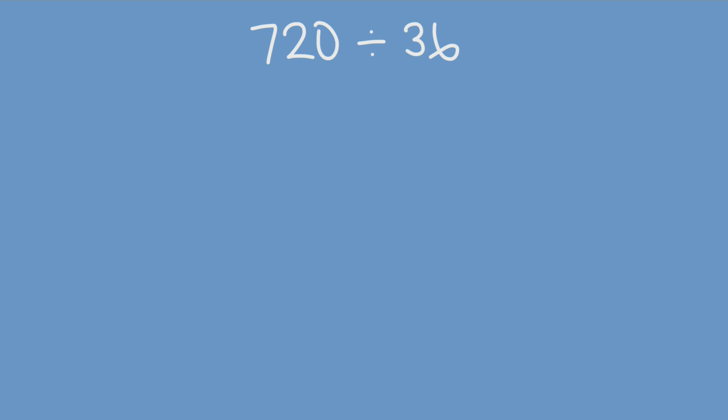To set up a simple division problem as long division, you first set a bracket that looks like this. This bracket doesn't really have a name, so we'll just call it the long division symbol. You place the divisor, which in this case is 36, on the left-hand side of the long division symbol, and you place the dividend, which is 720, inside the symbol. And we officially have a long division problem.